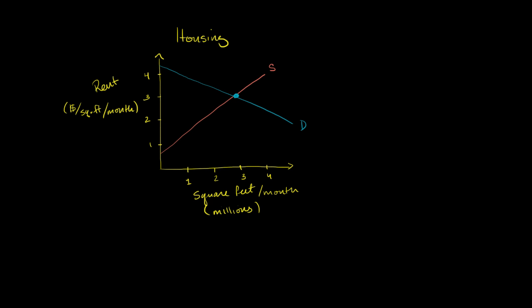What I have here is a supply and demand curve that represents a model for the housing market or the rental market in a given city. The vertical axis is dollars rent in terms of dollars per square foot per month. The horizontal axis is square feet per month in millions of square feet. I want to view the demand curve right over here as a marginal benefit curve.